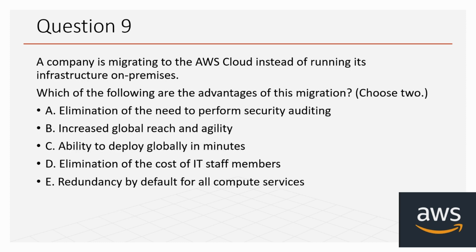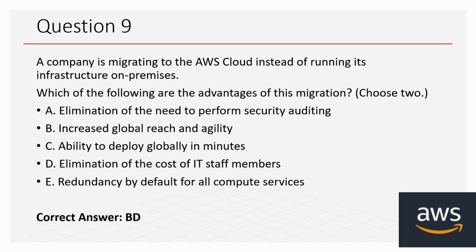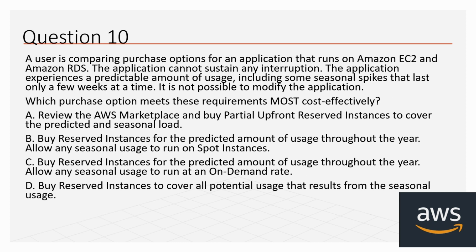Question nine: a company is migrating to the AWS Cloud instead of running its infrastructure on premises. Which of the following are advantages of this migration? Choose two. The options are: elimination of the need to perform security auditing, increased global reach and agility, ability to deploy globally in minutes, elimination of the cost of IT staff members, and redundancy by default for all compute services. The correct options are B and D — increased global reach and agility, and elimination of the cost of IT staff members.